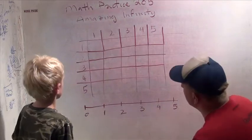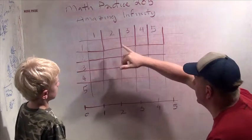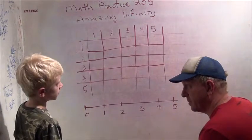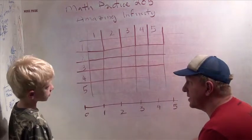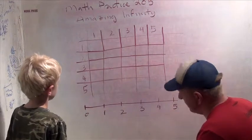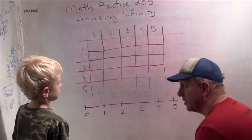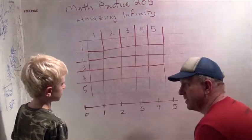So far, we've talked about infinity with the counting numbers: 1, 2, 3, 4, 5, 6. And we learned that if you do that, you have the same number of even numbers as all numbers, right?